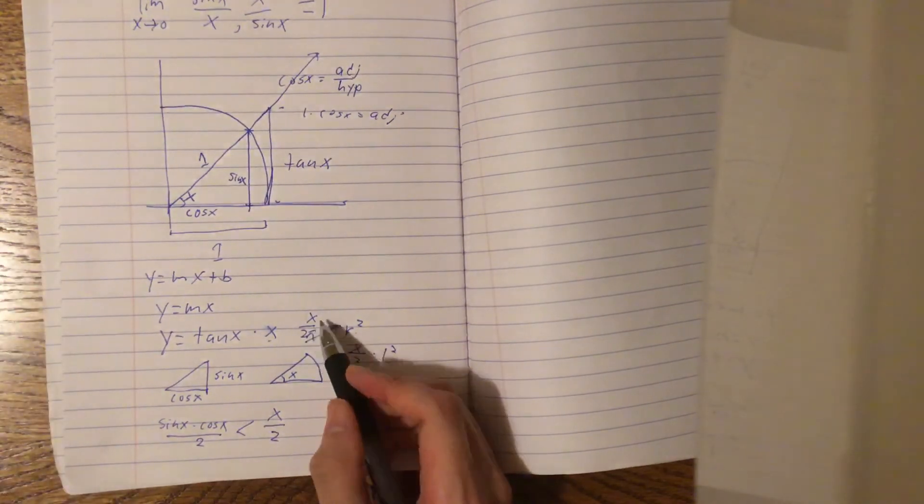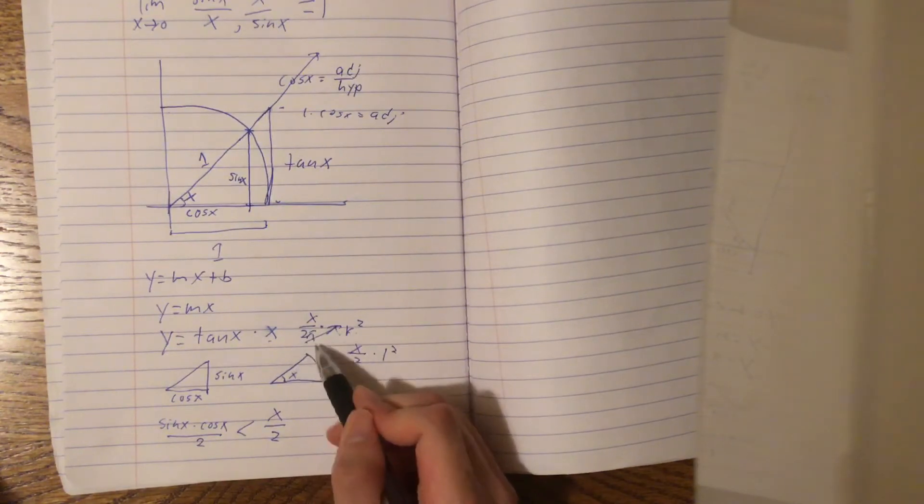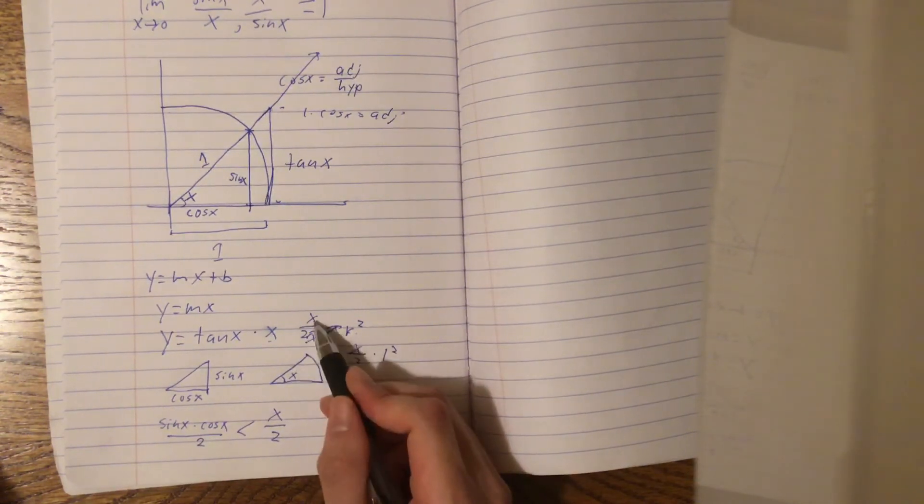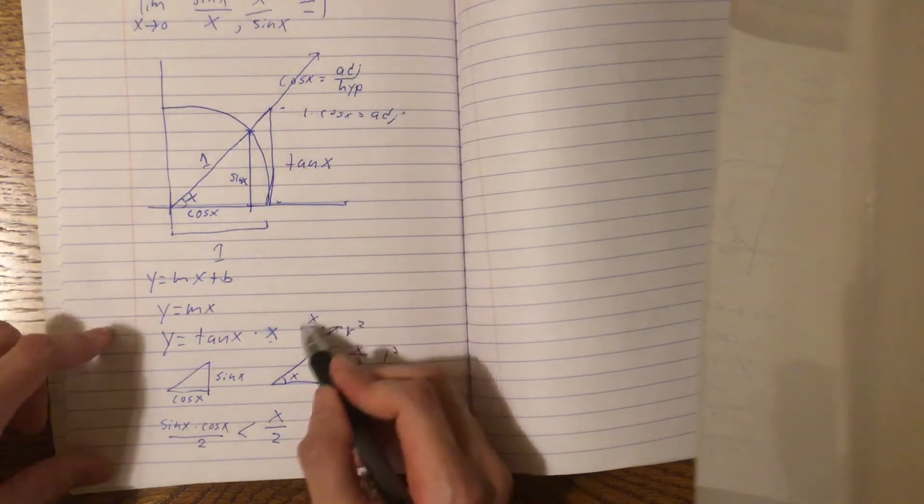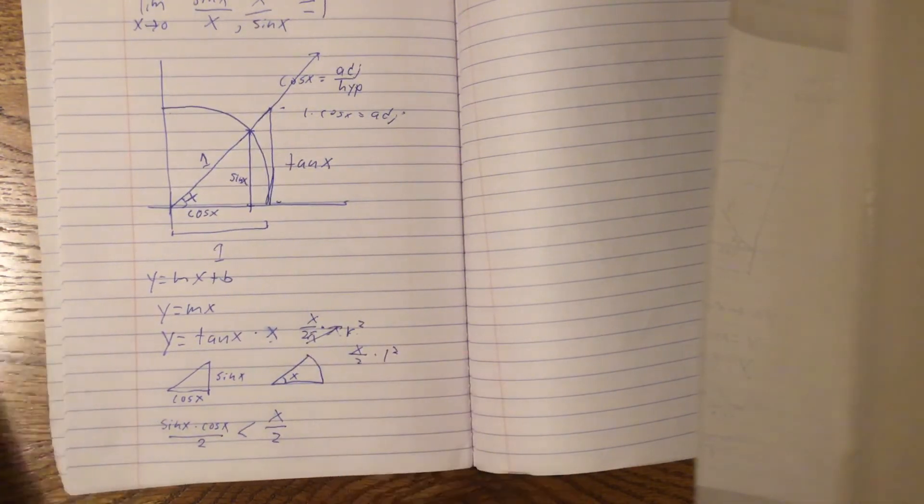It's x over 2 pi, because x over 2 pi represents the portion. 2 pi is a full circle, so if x is in radians, then x over 2 pi would represent the portion of the circle that's being taken into account.